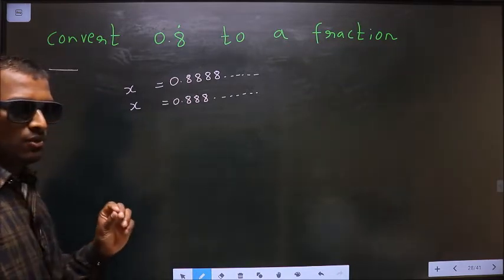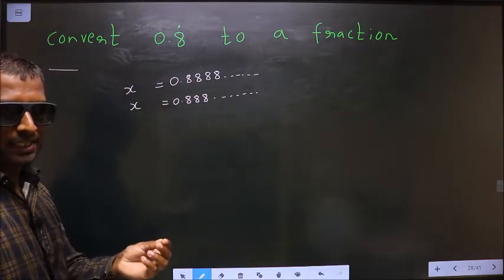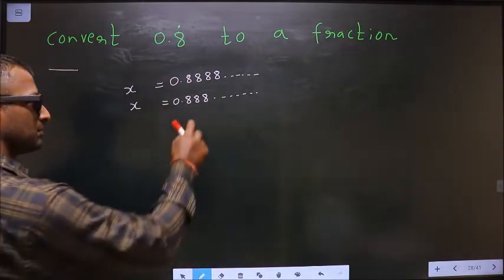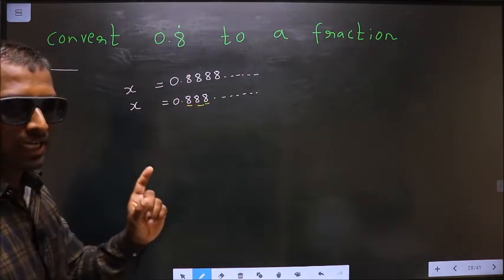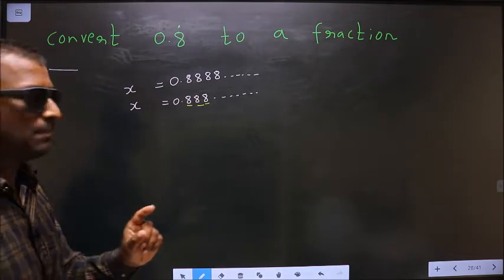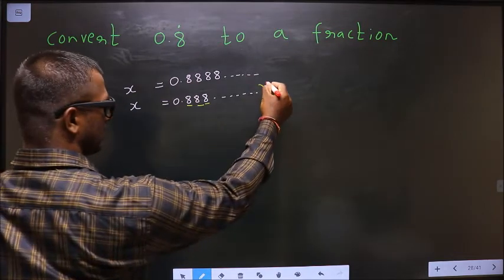Now you see how many numbers are being repeated in this sum. 8 is being repeated. So whenever only one number is being repeated, we should multiply by 10 on both sides.